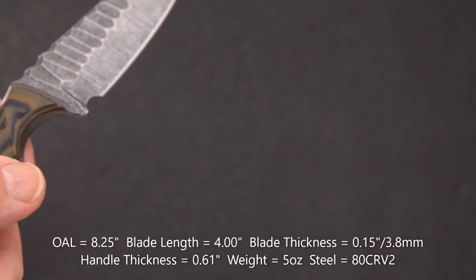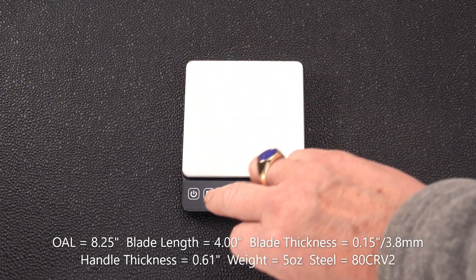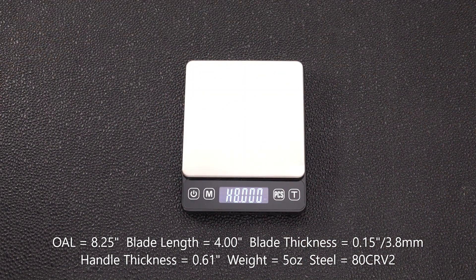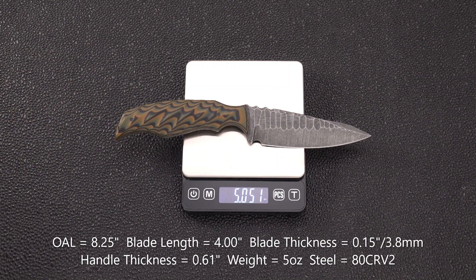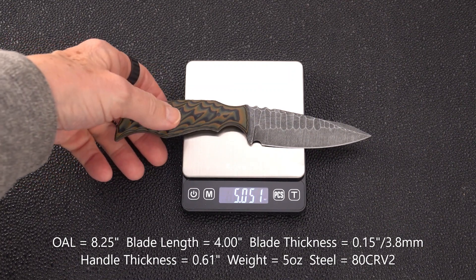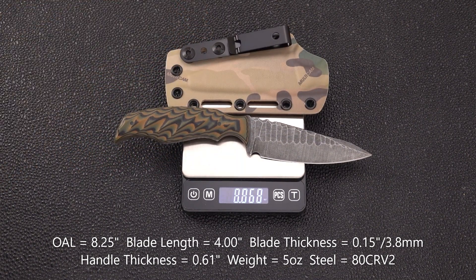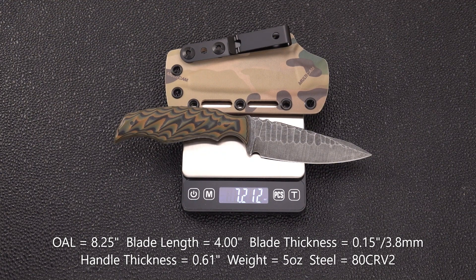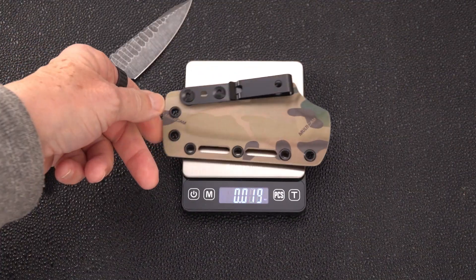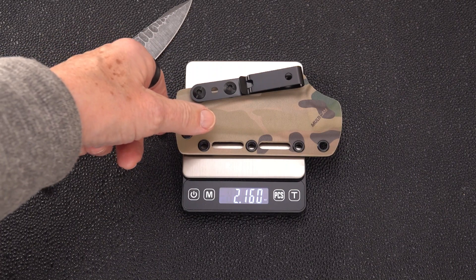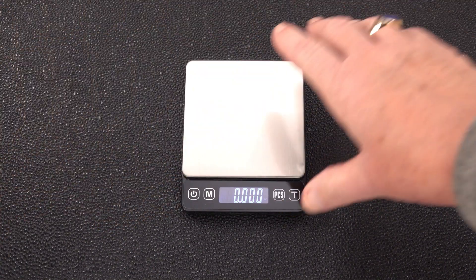And the weight without the sheath - we'll do it with the sheath too, what the heck - is 5.05 ounces. If we add the sheath on there it bumps it up to 7.2 ounces. So the sheath itself is 2.1 to 2.2 ounces. Kydex is pretty light.